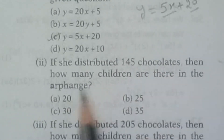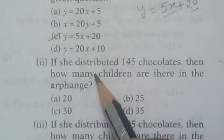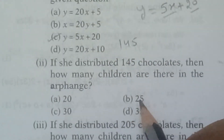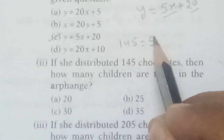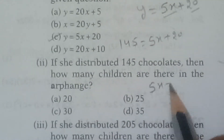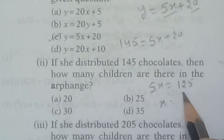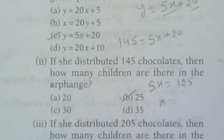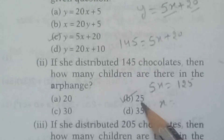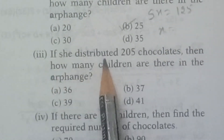Second question: if she distributed 145 chocolates, how many children are there in the orphanage? Total chocolates Y equals 145. Substituting into the equation: 5X plus 20 equals 145, so 5X equals 145 minus 20 equals 125. Therefore X equals 125 divided by 5, which is 25. If 145 chocolates are distributed, there are 25 children.